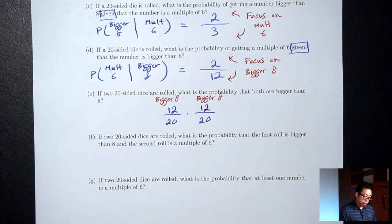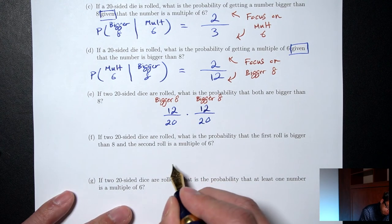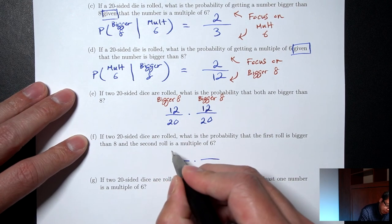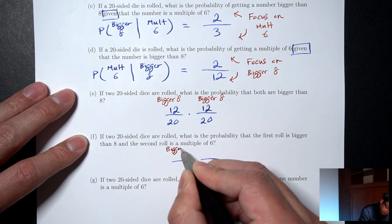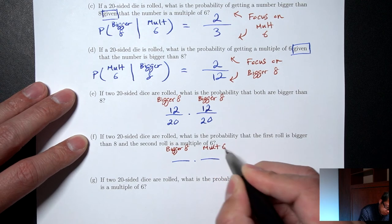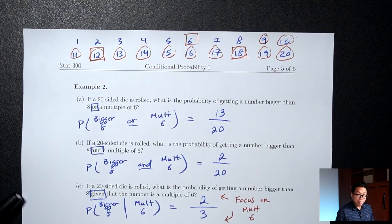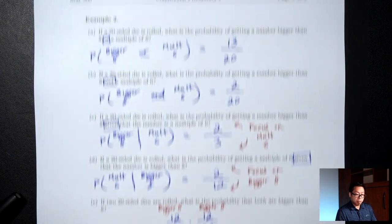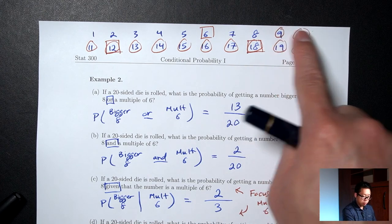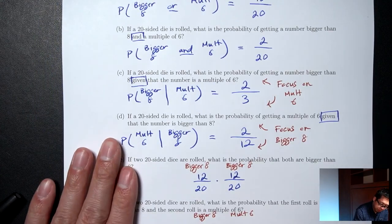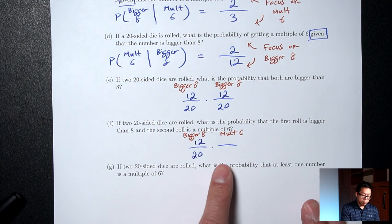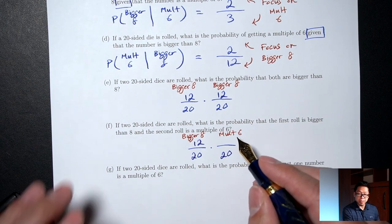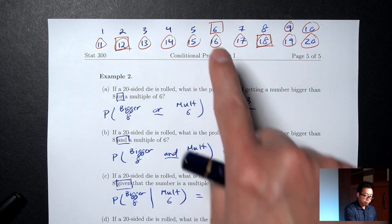Part F: if two 20-sided dice are rolled, what's the probability that the first roll is bigger than 8 and the second roll is a multiple of 6? Two dice, two fractions. First fraction: bottom 20, top is bigger than 8 = 12. Second fraction: because we're talking about dice, we don't reduce — bottom is still 20. Top is multiples of 6 (the boxes) = 3. Answer: (12/20) × (3/20).